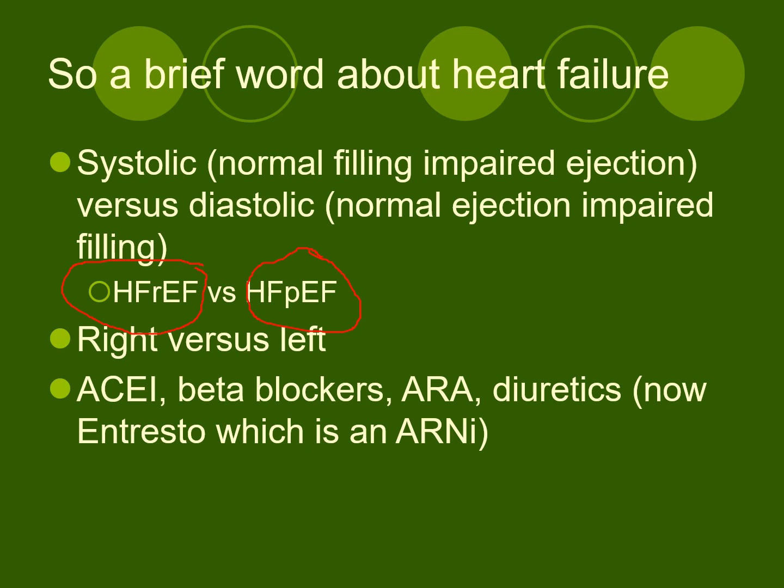Usual treatment for heart failure includes ACE inhibitors, beta blockers, angiotensin receptor antagonists, and diuretics. Entresto is a newer medicine — an angiotensin receptor and neprilysin inhibitor — that seems to have more impact than most other agents, though it remains very expensive and is not yet first-line. Some clinical caution is warranted until we've seen its effects over eight to ten years.